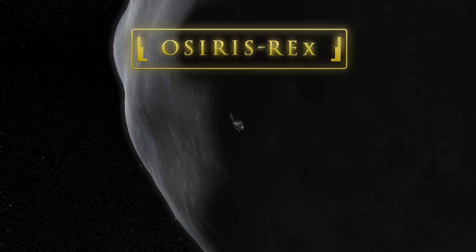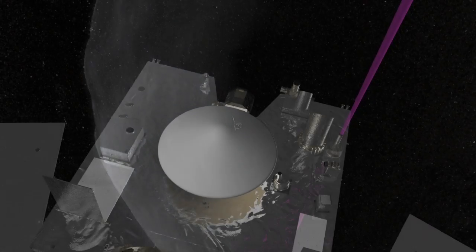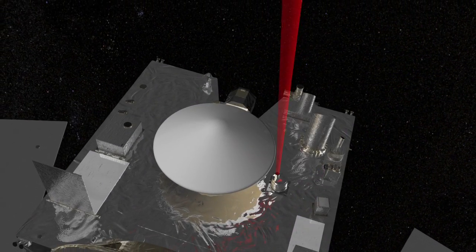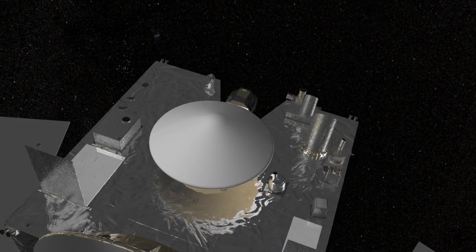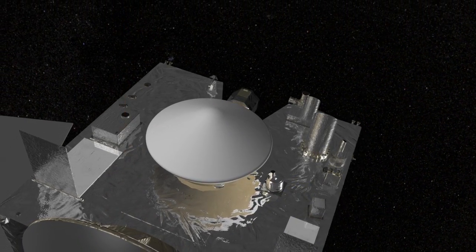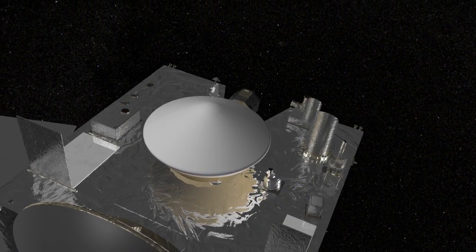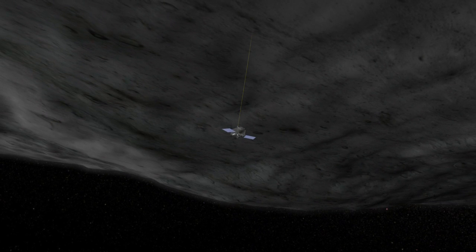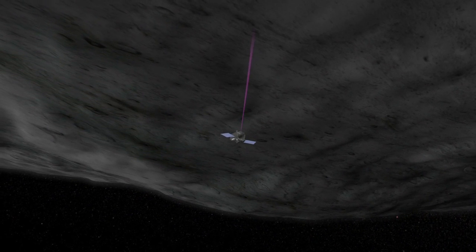OSIRIS-REx will study a near-Earth asteroid called Bennu. The mission will launch in 2016 and arrive at Bennu in 2018, where it will spend over a year surveying the asteroid in unprecedented detail, determining its chemical makeup, mineralogy, and geologic history.